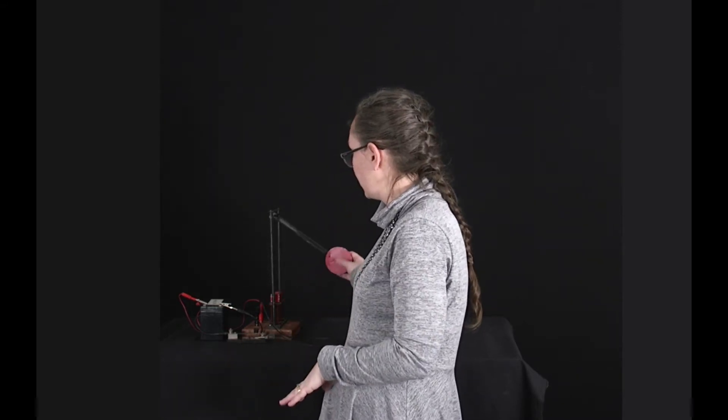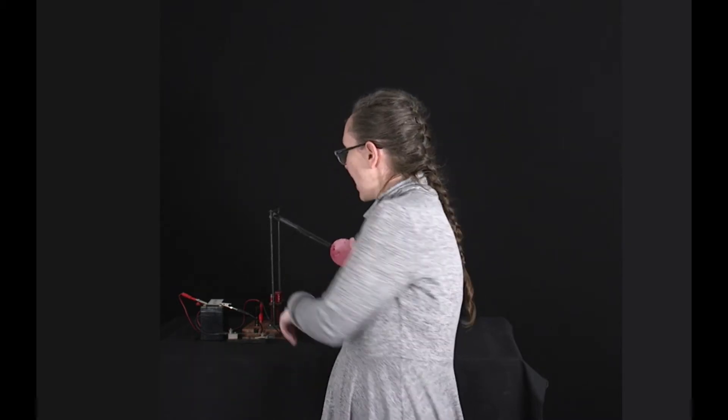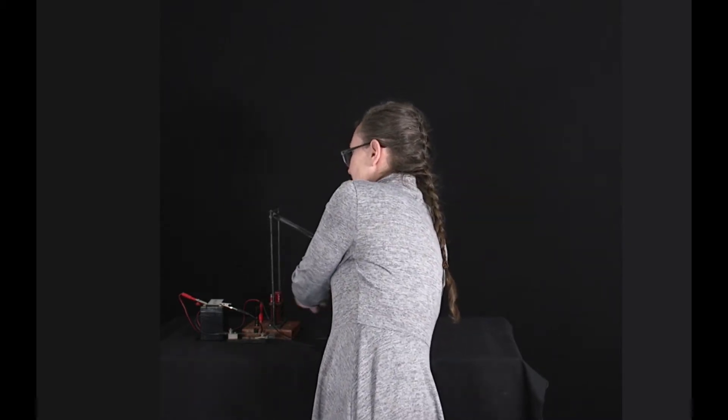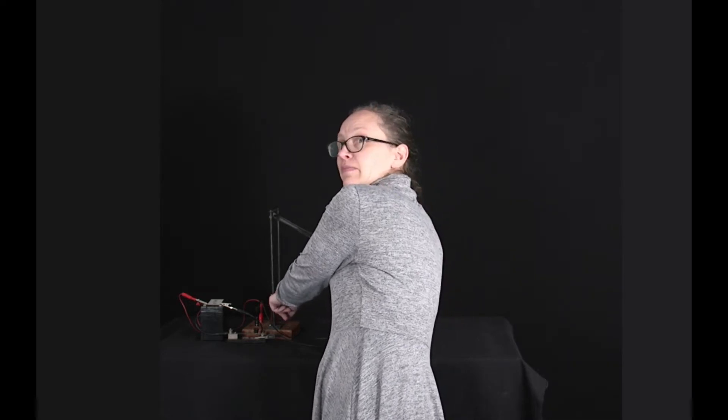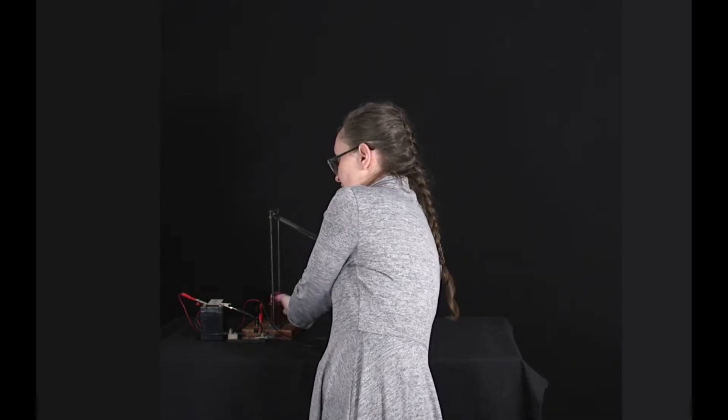So my eddy current pendulum consists of a metal plate, so this is not magnetic but it can conduct currents, and this metal plate is going to travel through an electromagnet. Because it's an electromagnet created from solenoids, I can turn the magnetic field on and off.